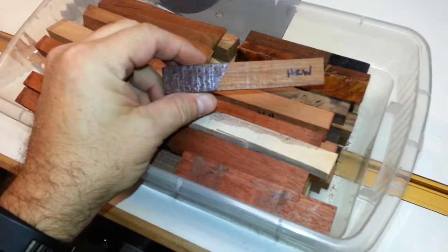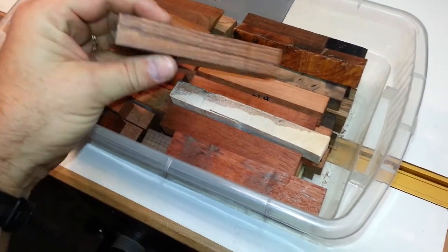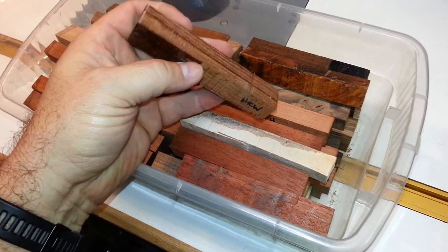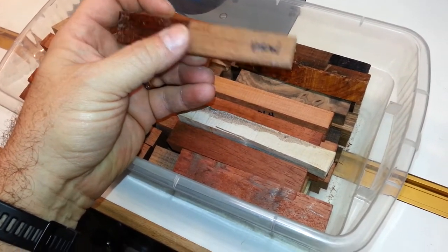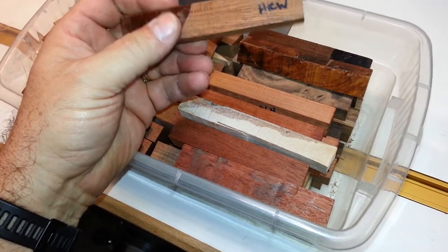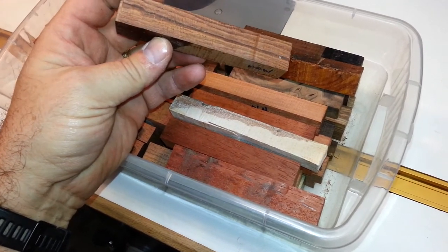As a habit I generally try to mark stuff. This is a piece of Honduran rosewood. It's not burl just the rosewood. This is actually a very pretty grain. I like that.